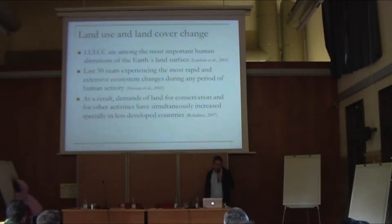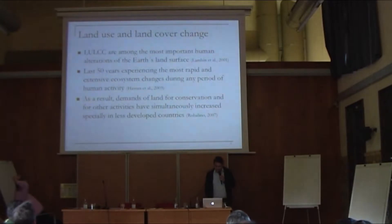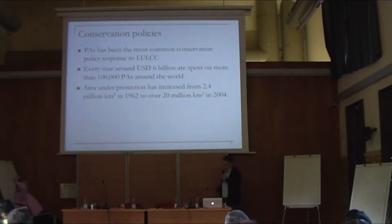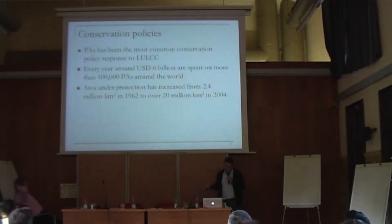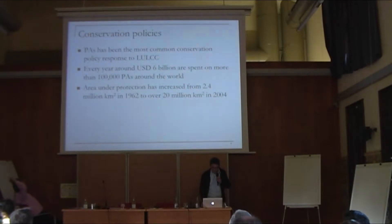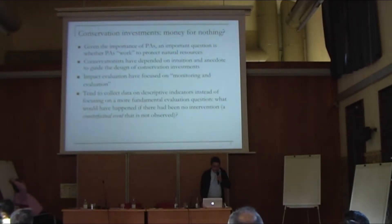As a result of these huge changes, the demand for land for conservation, but also for other uses like agricultural development, have increased at the same time. We are facing a double challenge. In terms of the main policy response to land use and land cover changes, protected areas have by far been the most common conservation policy response. We are spending a lot of money around the globe on more than 100,000 protected areas worldwide.